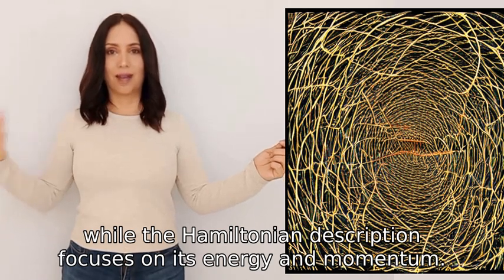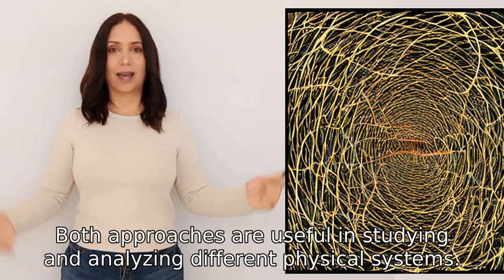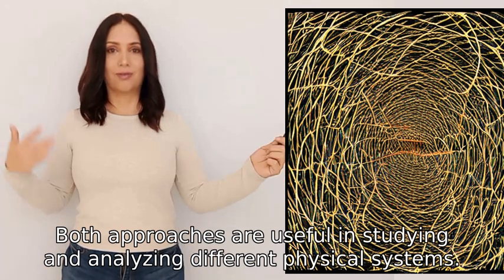In simpler terms, the Lagrangian description looks at how a system moves while the Hamiltonian description focuses on its energy and momentum. Both approaches are useful in studying and analyzing different physical systems.